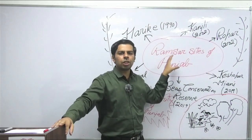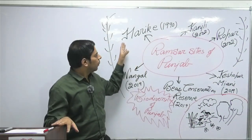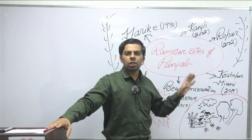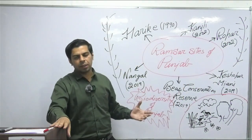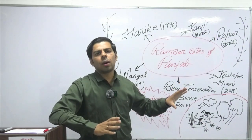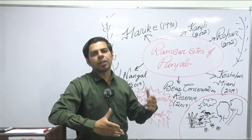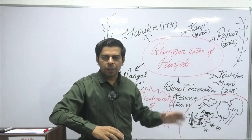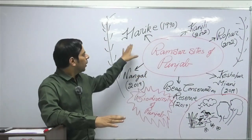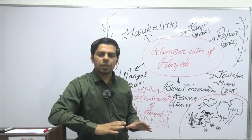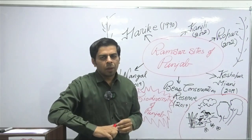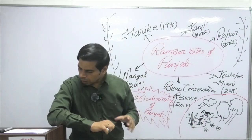Harike Patan is the first and most important Ramsar site of Punjab. A repeated question asked in both UPSC and Punjab exams is that Harike is at the confluence of two rivers — the Beas and Sutlej. The associated topic to study is Bari Doab, and the tributaries of the Indus river system — right bank and left bank. The main district associated with Harike is Tarn Taran, while Firozpur and Kapurthala are also included in the Harike Patan area.